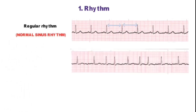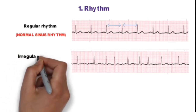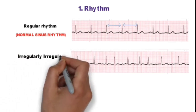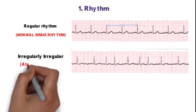In this second ECG you can see RR intervals are not equal and there is no identifiable P wave. Rhythm is irregularly irregular, which occurs most commonly in atrial fibrillation.